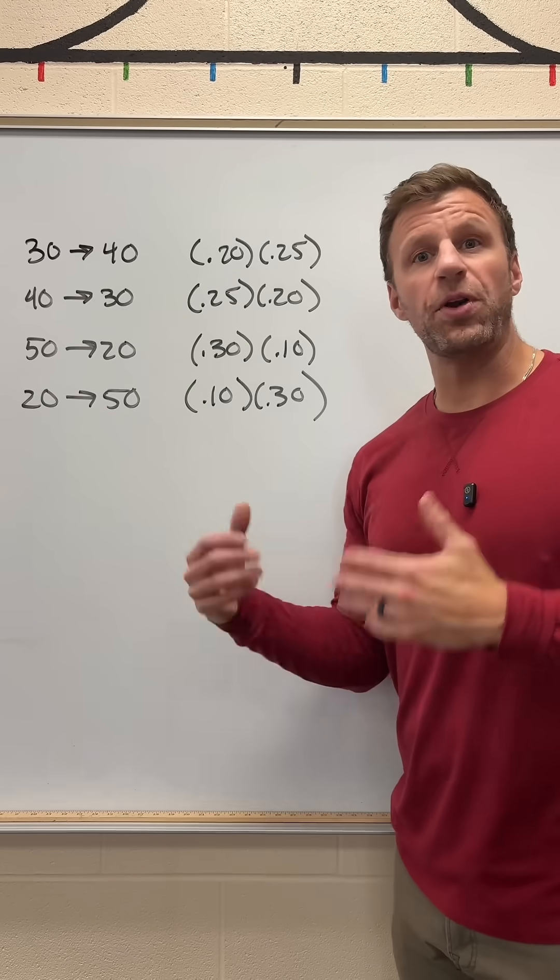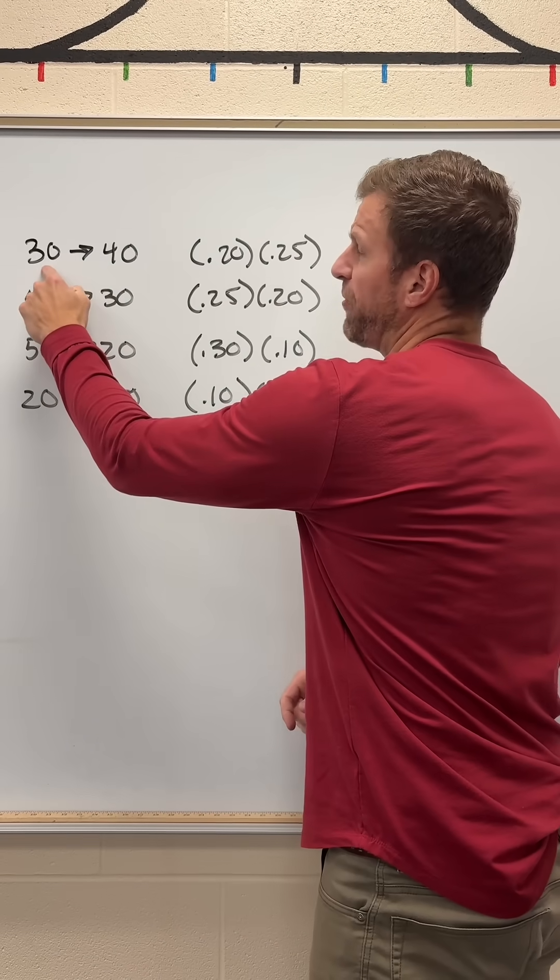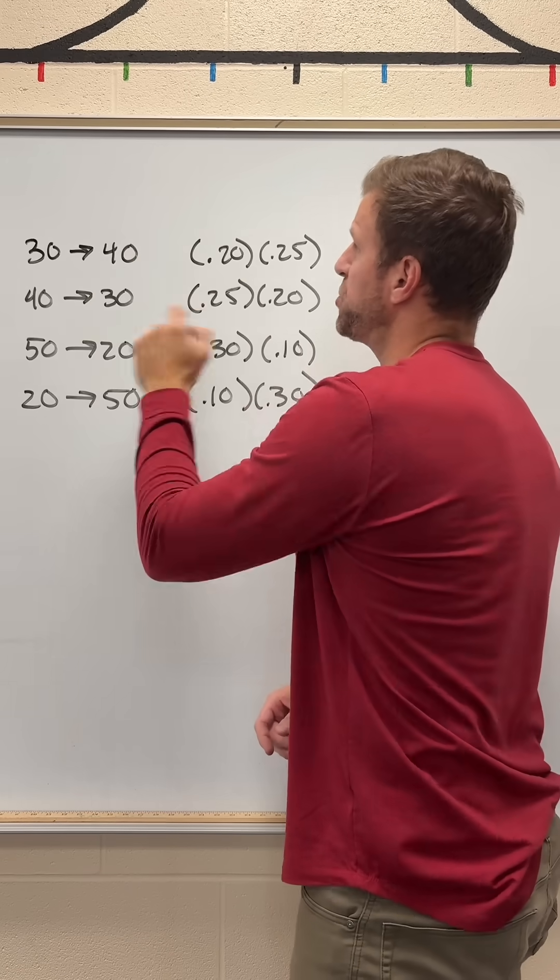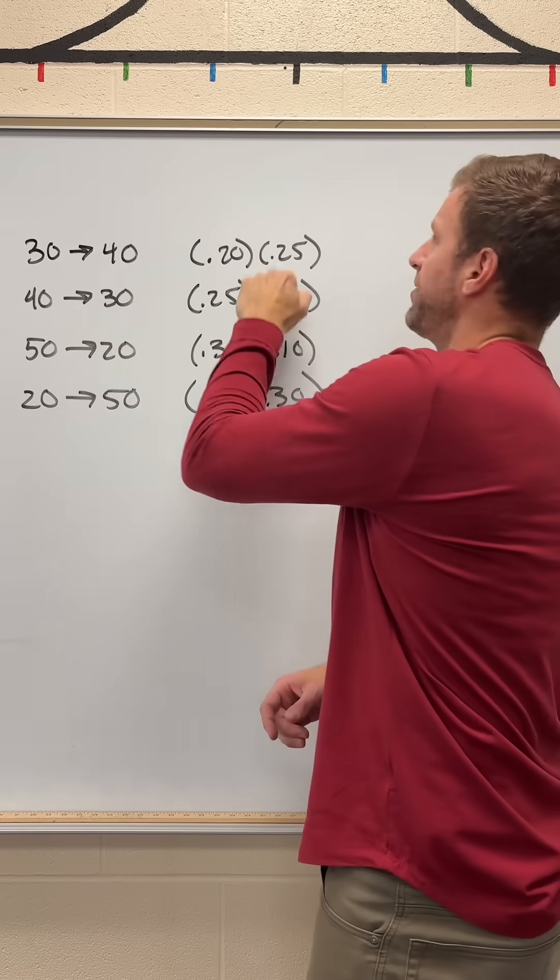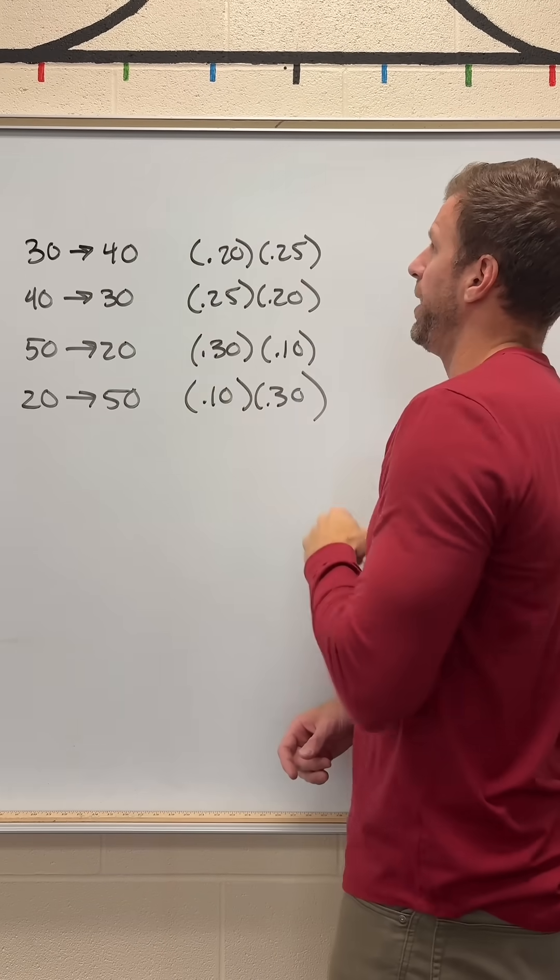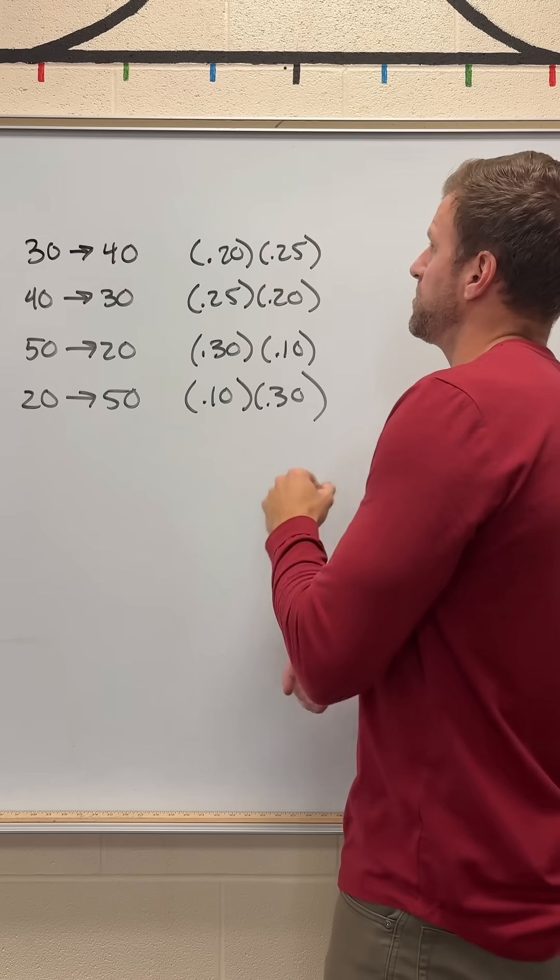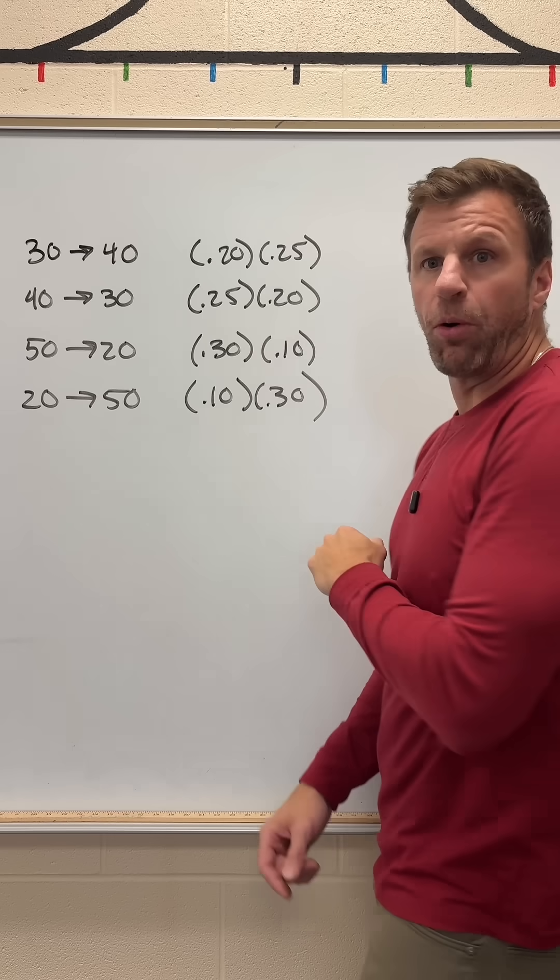All right, so here are the probabilities of each of those outcomes. If we want to get a 30 on the first play, we need that 20% chance to occur from the probability distribution. And then we want a 40 on the second, that's going to be a 25% chance. Multiply those together using the general multiplication rule. Multiple plays of the game, multiply the outcomes. Now that's going to be 0.05.